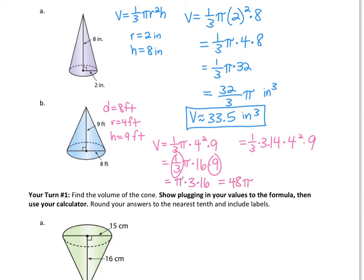The exact answer left in terms of pi is 48π feet cubed, since volume is cubed. Then typing 48π into the calculator using actual pi, and since we're rounding we use the wavy equal sign to show estimation — the volume is approximately 150.8 feet cubed. That is your exact answer, and 150.8 is the rounded estimate using actual pi.